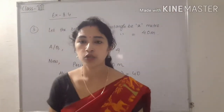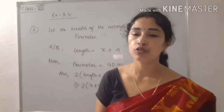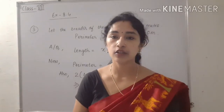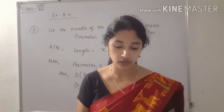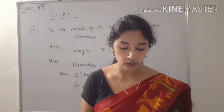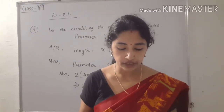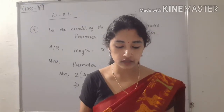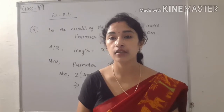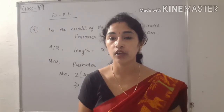Question 2 is the same type as question 1, so please try to do it yourself. I am moving on to question 3. In question 3: the length of a rectangle exceeds its width by 4 metres, meaning length is greater than breadth by 4 metres.